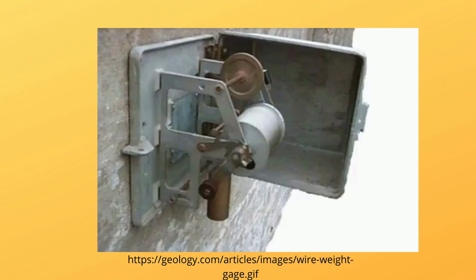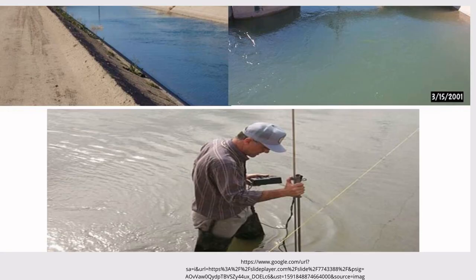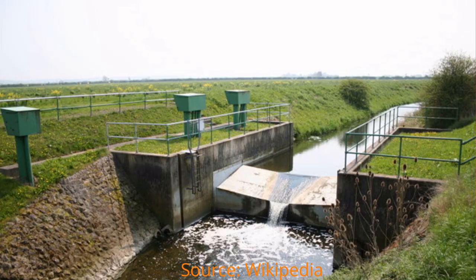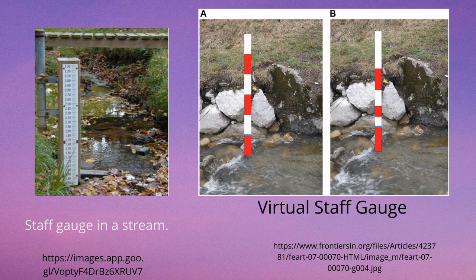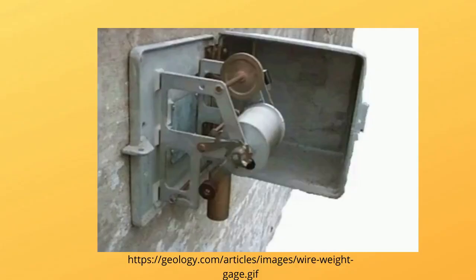Water surface elevation, also called stage, is measured with the help of different manual or automatic gauges like staff gauges, wire gauges, float gauges, and recorders. Likewise, the volumetric flow, that is discharge of a stream, is measured by different methods like velocity-area method, current meter method, salt dilution method, slope-area method, ultrasonic method, and hydraulic structures like weirs and gated structures.